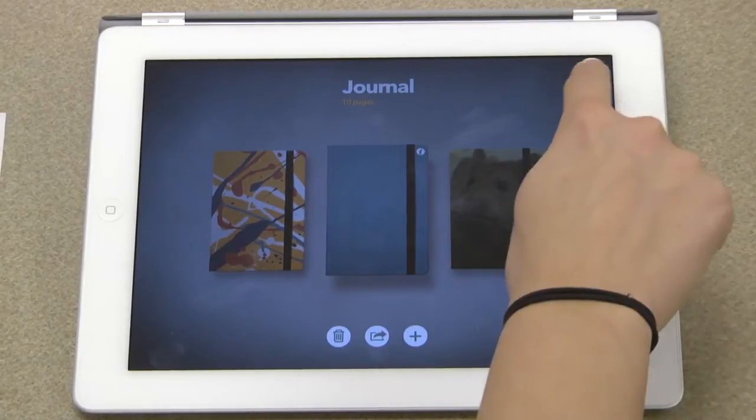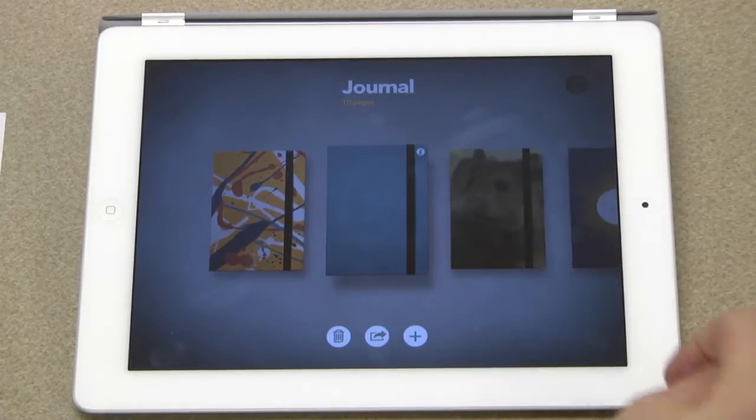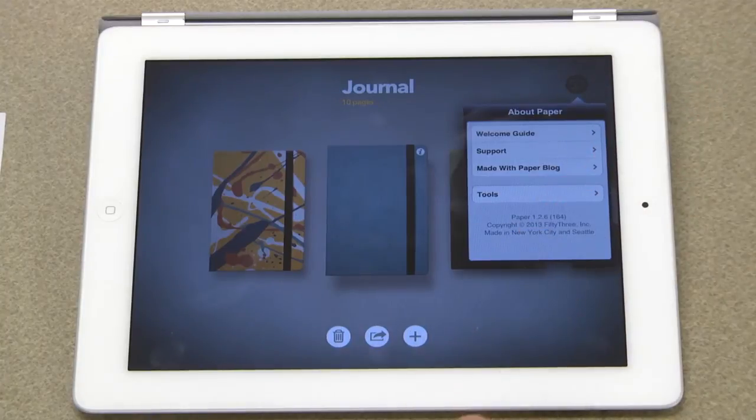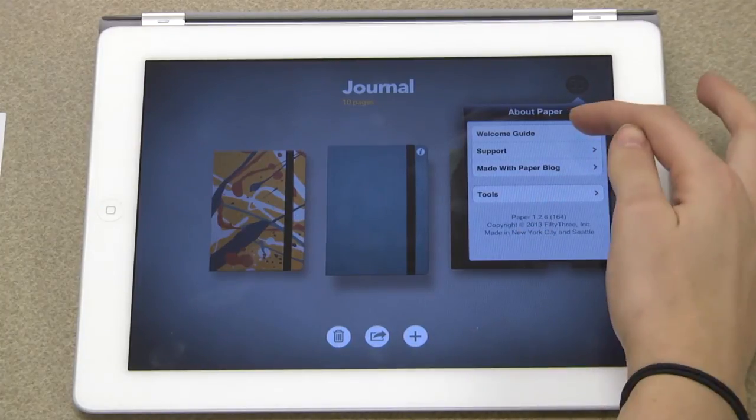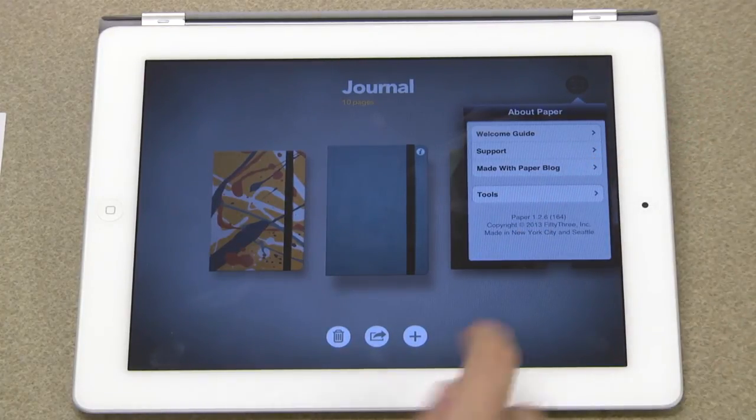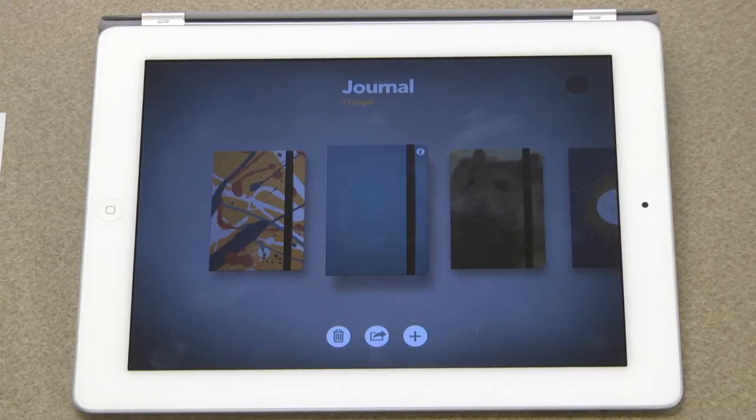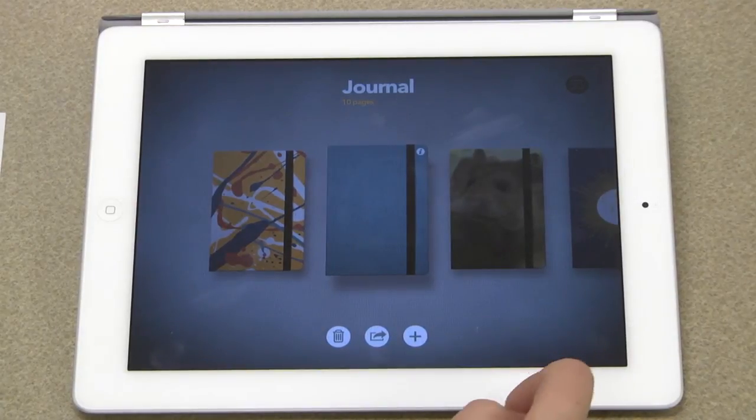Finally, the 53 icon gives access to a welcome guide and website links. Paper 53 is a fun way to let out some creative juices in note-taking and sketchbooks, especially if you purchase the extra tools for creating. My personal favorite is the paint tool that makes very light and natural-looking watercolor strokes. Thanks for listening.